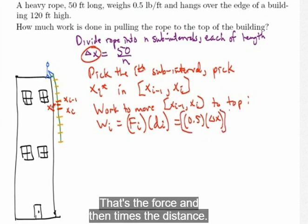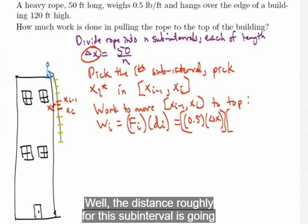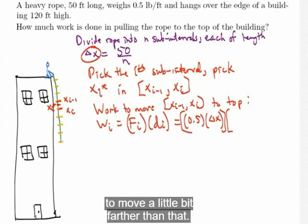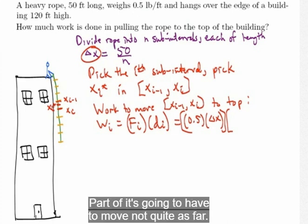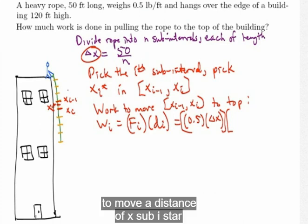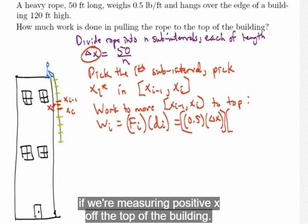And then times the distance. Well, the distance, roughly, for this subinterval, is going to be the x sub i star I picked. Now, part of it's going to have to move a little bit farther than that. Part of it's going to have to move not quite as far. But on average, we could say, or roughly, this subsection has to move a distance of x sub i star if we're measuring positive x off the top of the building.